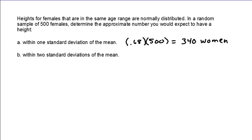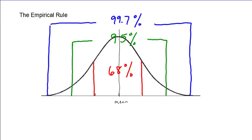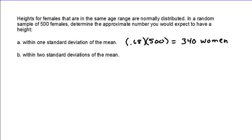So similarly how many women would be within two standard deviations of the mean? Well according to the green lines that I drew here, according to the empirical rule 95% of data values fall within two standard deviations of the mean.